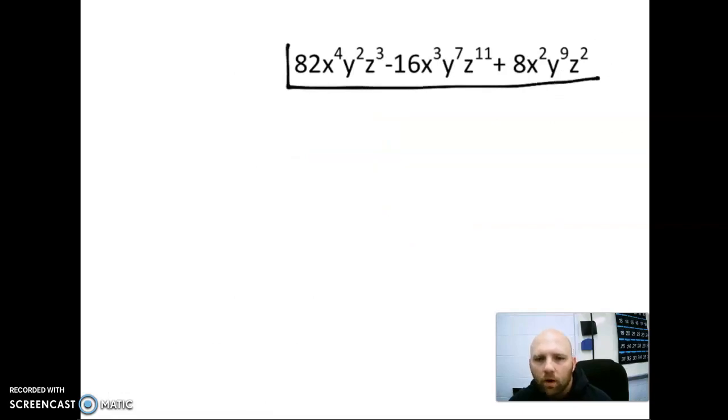We have a more difficult problem here. We want to look at the numbers 82, 16, and 8. You might think that we can divide those by 8 because 8 and 16 are both divisible by 8, but 82 is not divisible by 8. So then maybe we try 4. 8 and 16 are both divisible by 4, but 82 is not divisible by 4 either.